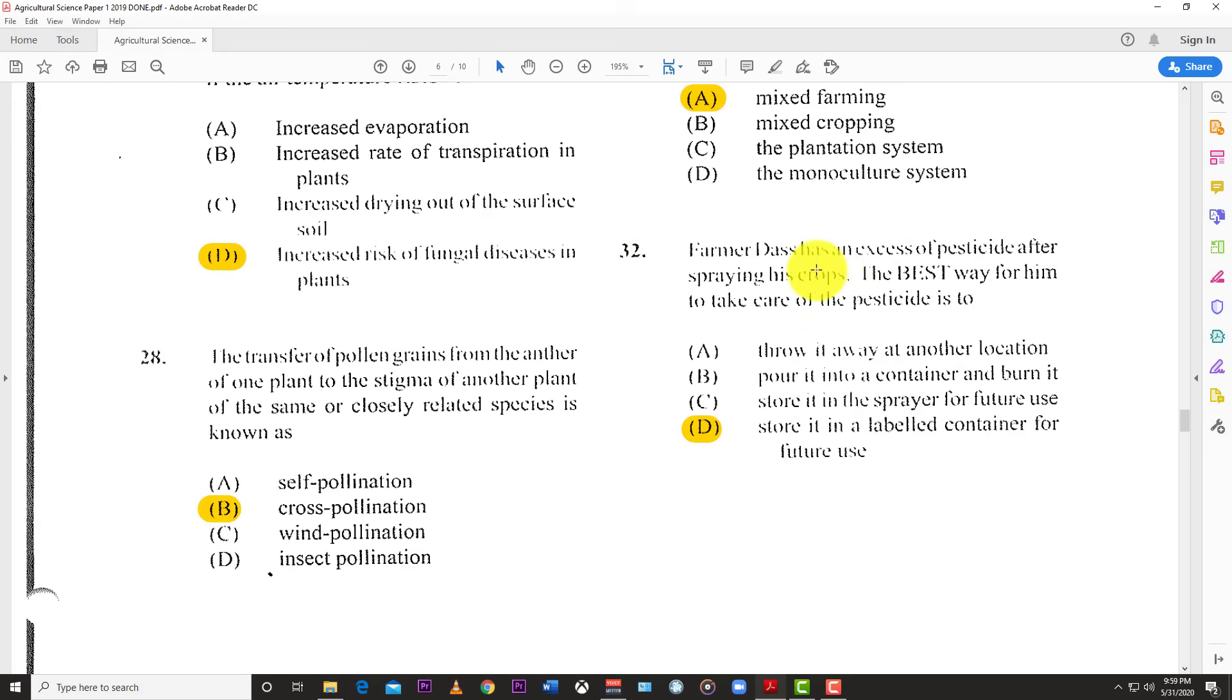Number 32: Farmer Das has an excess of pesticides after spraying his crops. The best way to take care of the pesticide is to store it in a labeled container for future use.